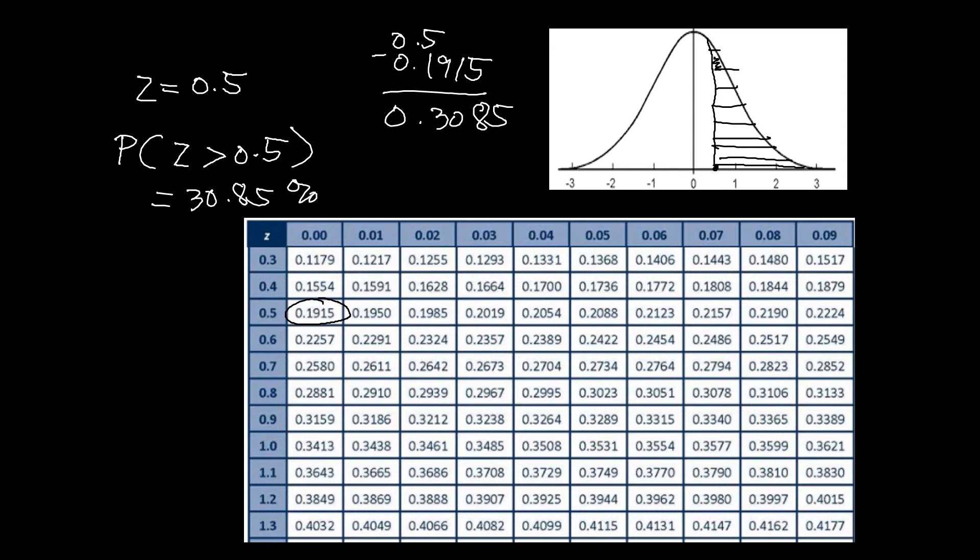So that is how you are going to look for that area or the probability. So it's only 30.85% of chances that you will be choosing a president with the age greater than 58 years old. So that means it's going to be lesser probability or lesser chances. I hope that's clear.